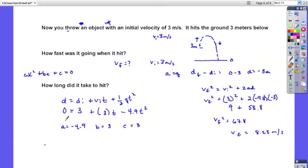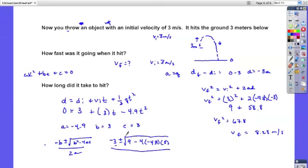Do you remember your quadratic formula? Negative b plus or minus the square root of b squared minus 4ac all over 2a. So, negative 3, negative b plus or minus the square root of b squared, which is 9, minus 4 times negative 4.9, that's a, 3, over 2 times negative 4.9 would be negative 9. Okay.